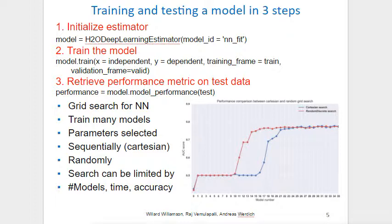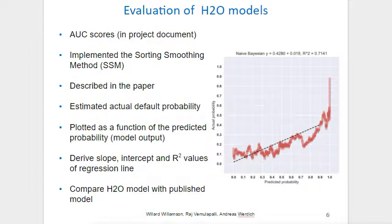The search can then be limited by the number of models, by the runtime, and the desired accuracy. We evaluated our H2O models by using AUC scores, which are provided in the project document. We also implemented the sorting smoothing method, which is described in the paper and estimates the actual default probability based on the target labels. We can then plot the actual probability as a function of the predicted probability, which is the model output, and perform a regression to derive the slope, the intercept, and the R-squared values.